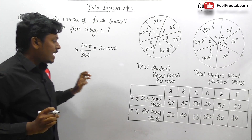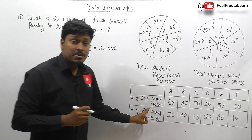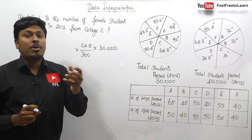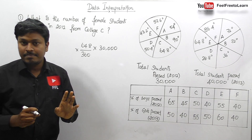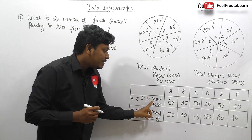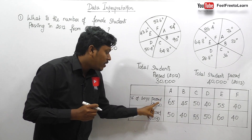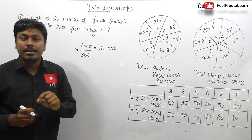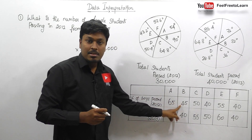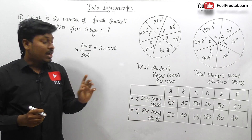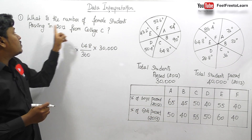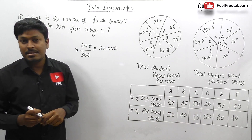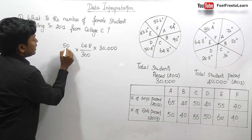Our target is to find the female students passed. The percentage of boys passed in 2012 in College C is 50%, so the remaining 50% will be girls. For example, if 65% of boys passed in College A in 2012, then the remaining 35% should be girls. Similarly, if 45% are boys, then the remaining 55% must be girls. So for College C, male passed is 50%, meaning the remaining 50% is female.